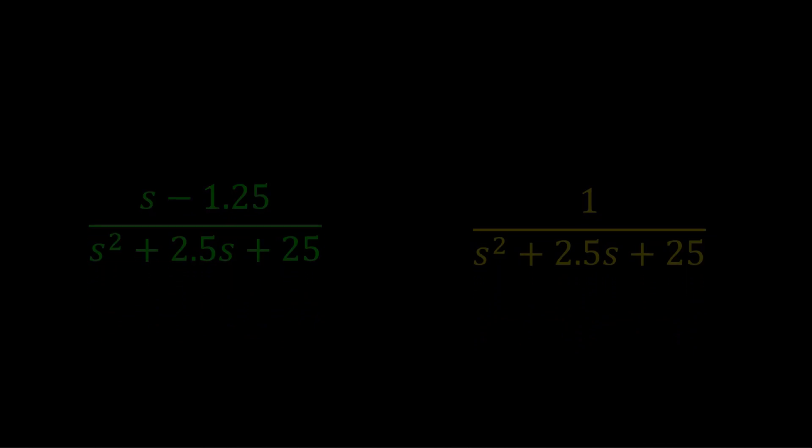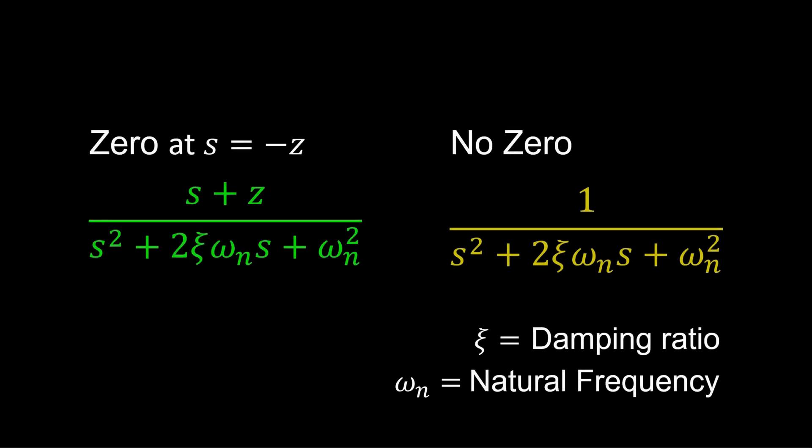Let's generalize the transfer functions. They describe the response of a second-order system. The left has a zero at s equals minus z. The right has no zero.